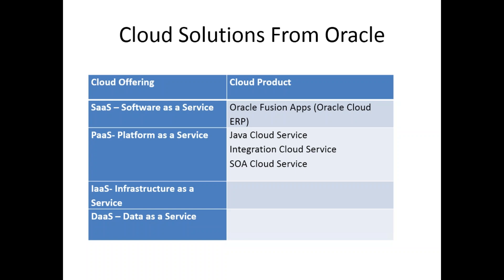For example, if you're a startup and want to trial a particular functionality for one month, you don't need to buy expensive hardware to test your product. You just subscribe to hardware from Oracle, Amazon, Google, or Microsoft, use their hardware service for that month, and stop. These are the different cloud offerings from various vendors.